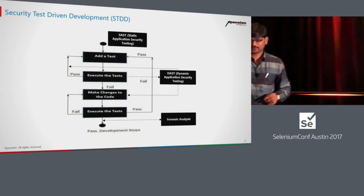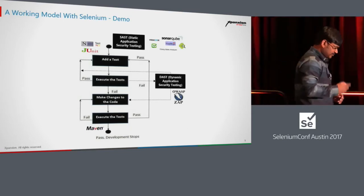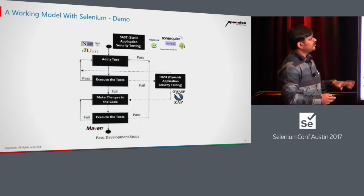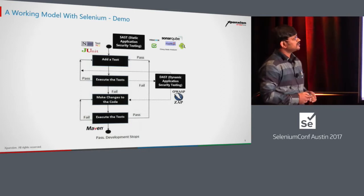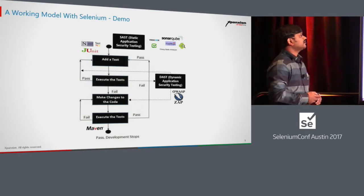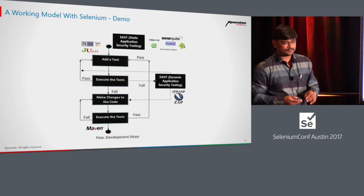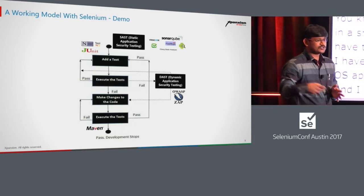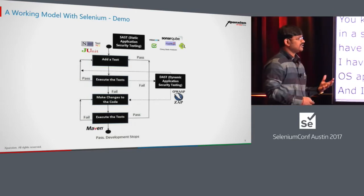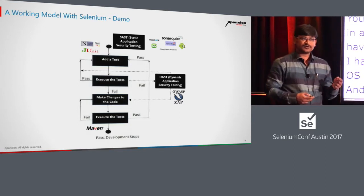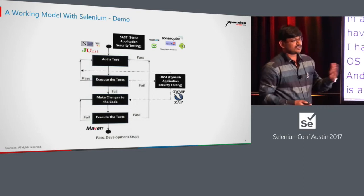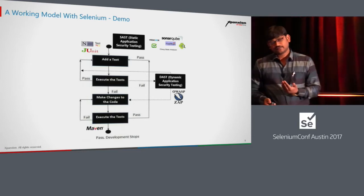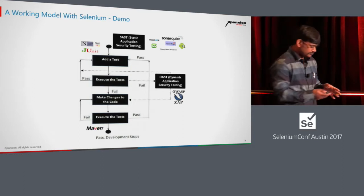Now let's try to implement this. I'll showcase a small demo. What I've done is taken FindBugs as my static scan, and used OWASP ZAP along with Selenium. ZAP acts as a proxy for me. It's not necessary to use ZAP specifically — you can go with Wireshark, Burp Suite, or other tools. The key point is that your functional automation already covers almost all the crawling, so we leverage that crawling in terms of ZAP.